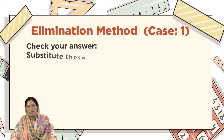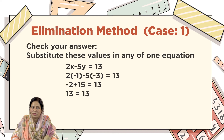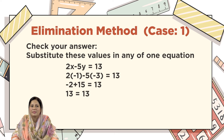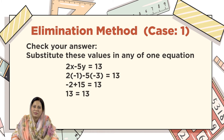Finally, you can check your answer as well. If you want to check whether your answer is correct, substitute these values into any one of the given equations. I am substituting into 2x minus 5y equals 13. If the values of x and y satisfy the given equation, it means our solution is correct. After substituting, I can see that 13 equals 13, which means the given values of x and y satisfy the given equation.